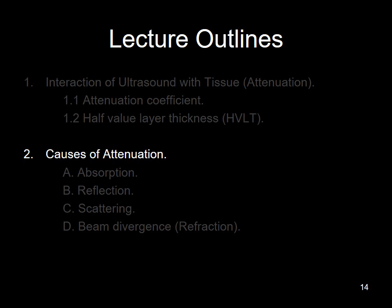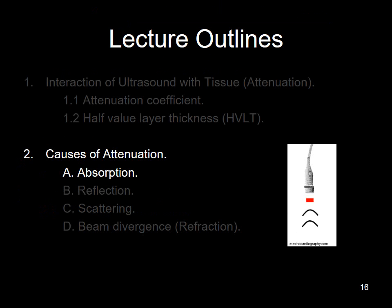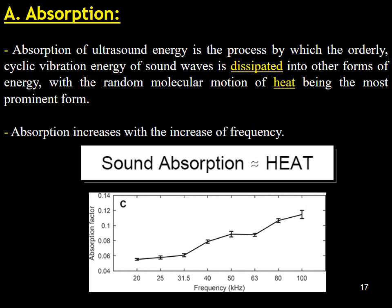It's time to discuss what causes attenuation. Attenuation is caused by processes such as absorption, reflection, scattering, and beam divergence, also known as refraction. In the remainder of the lecture, I will go over each cause in detail. The process by which the energy of an ultrasound beam is taken up by matter is known as absorption. The orderly cyclic vibration energy of sound waves is dissipated into other forms of energy, the most prominent of which is random molecular motion or heat — this is known as ultrasound absorption. Also keep in mind that as frequency increases, so does absorption.